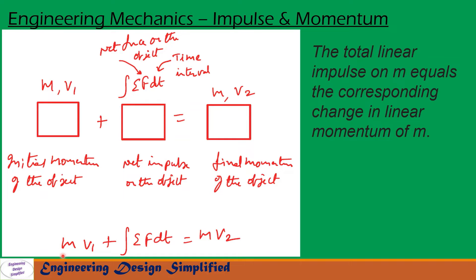If we move m·v₁, the initial momentum, to the right side of this equation, then the right side becomes m(v₂ - v₁). So this is the net change in linear momentum.